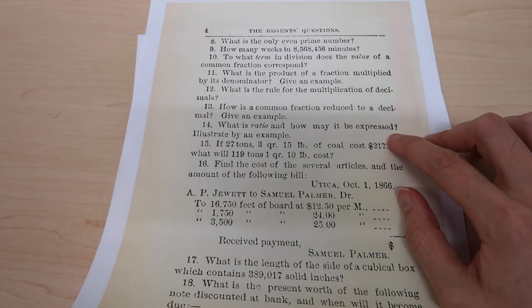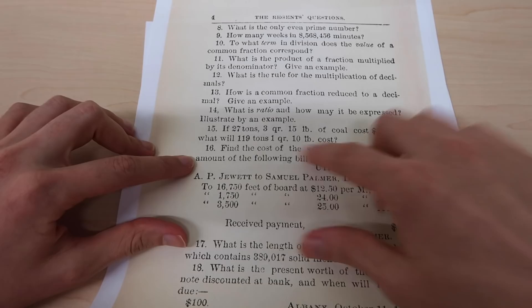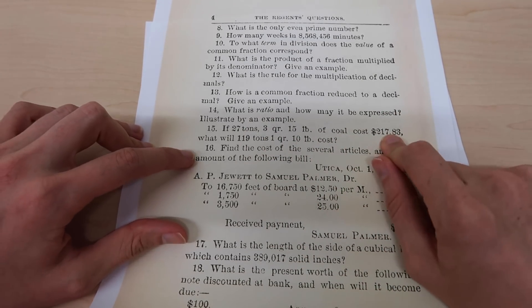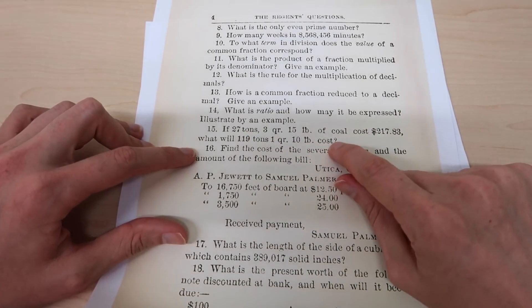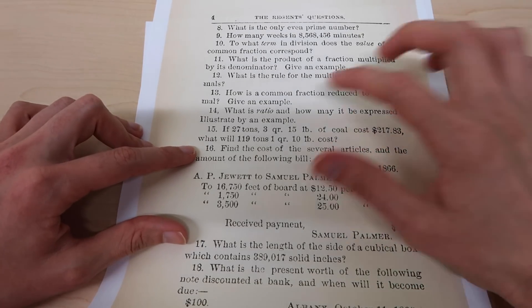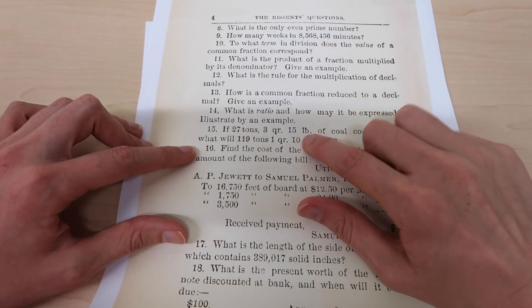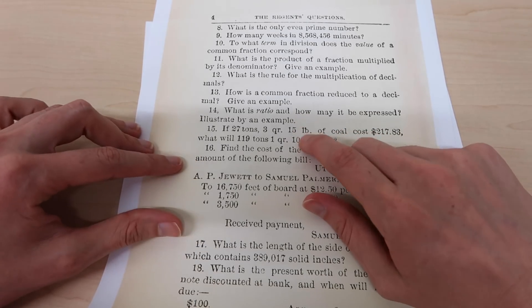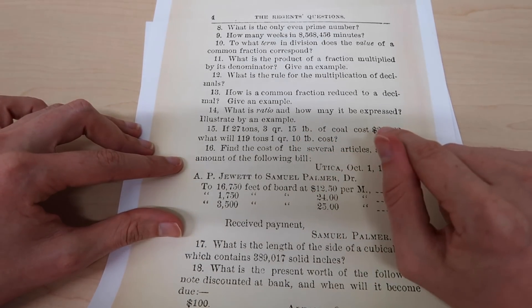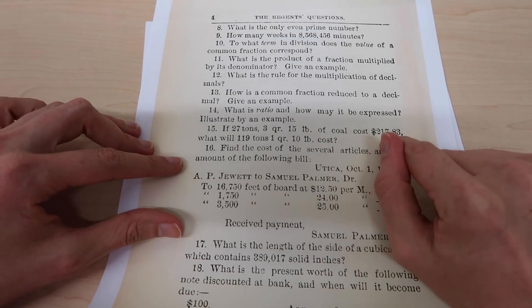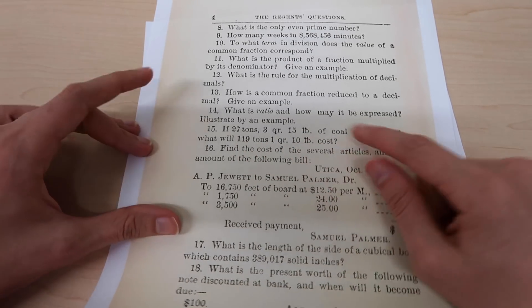Number 14: what is ratio and how may it be expressed? This one's a little difficult to put into words, but I guess I would say that a ratio is the number of times one value is contained within the other. Number 15: if this amount of coal costs this amount of dollars, what will this amount of coal cost? So I think this is another case of converting the whole value into the lowest denominator, like pounds or something, and then working out how much each pound costs, then converting this one into pounds and working out its total cost.